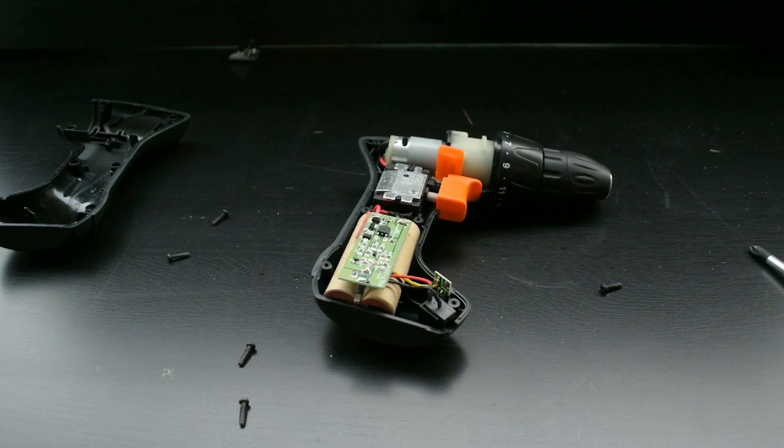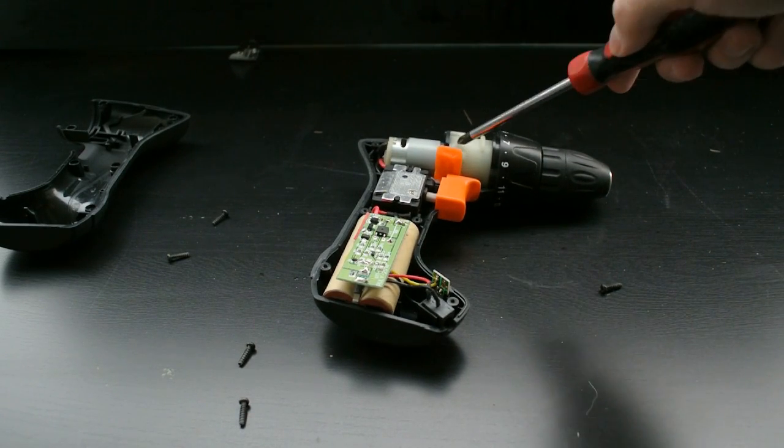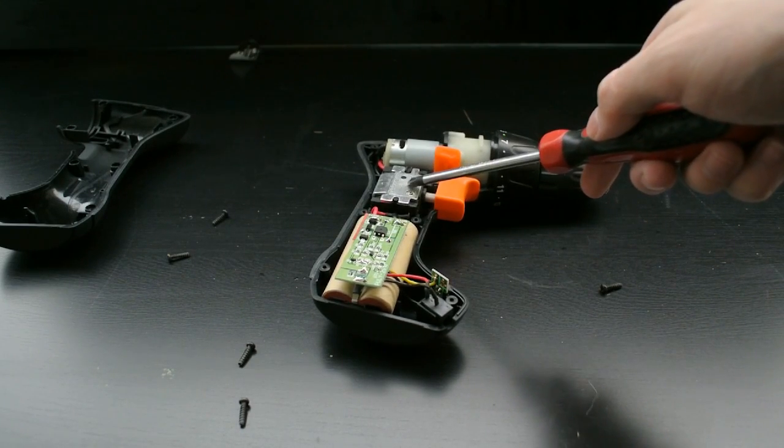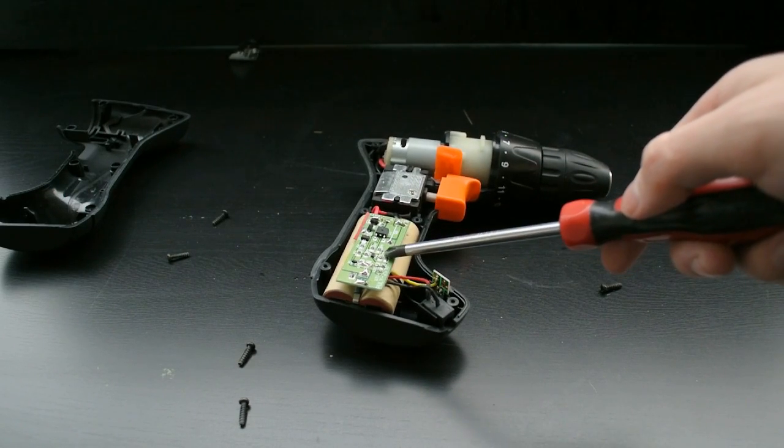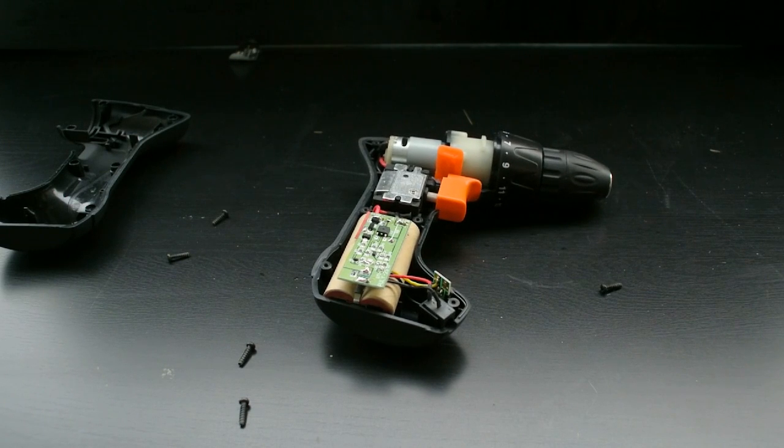The device itself is very simple. You have your gearbox, your electric motor, the turning on switch, the batteries, the charging circuit, the charging jack and the charging light. And that's the entire device.